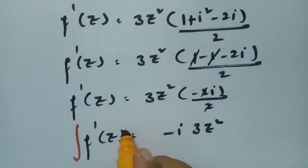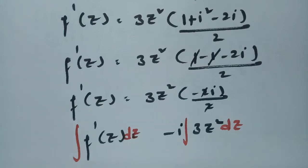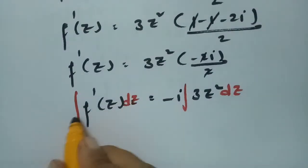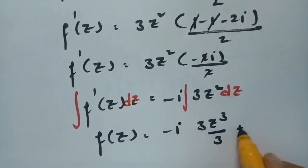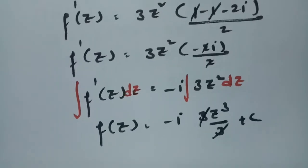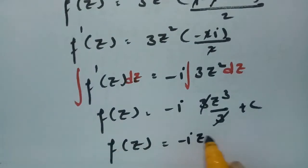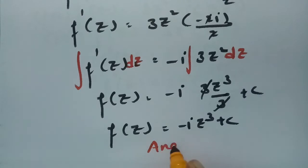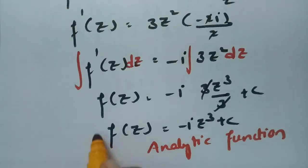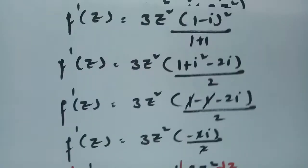Integrating both sides: f(z) = -i·(3z³/3) + c = -i·z³ + c. So our required analytic function is f(z) = -iz³ + c.